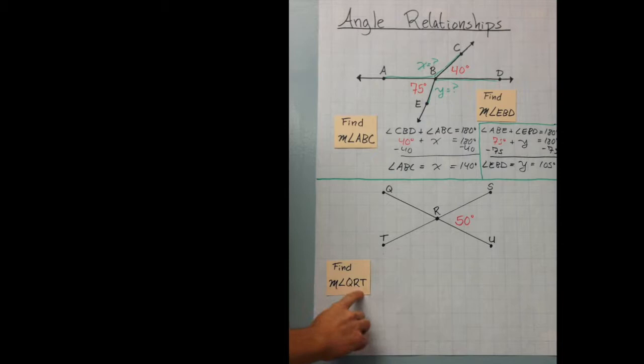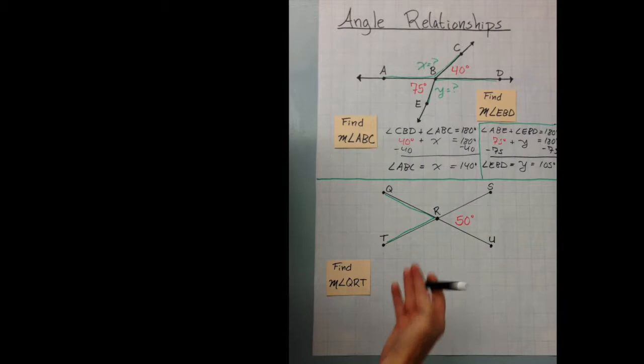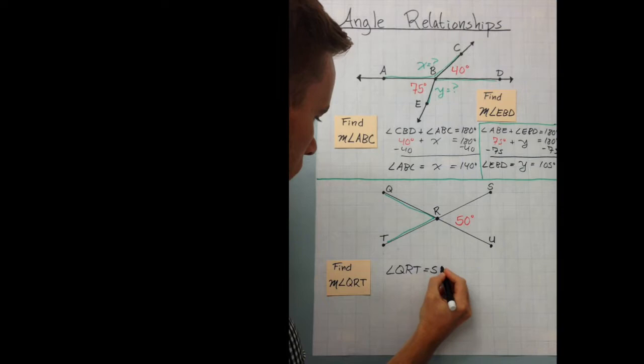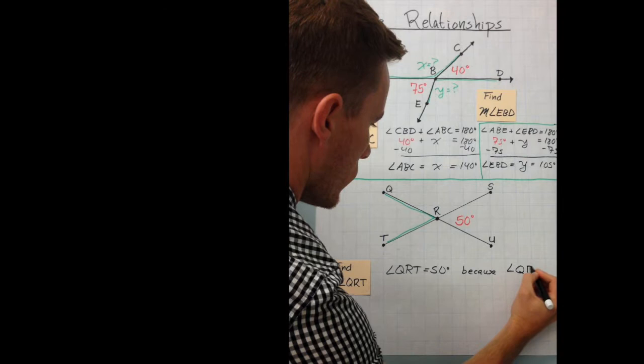If I asked you to find QRT, you don't even have to do algebra. You can just tell me this. Angle QRT equals 50 degrees. And you can just explain it.